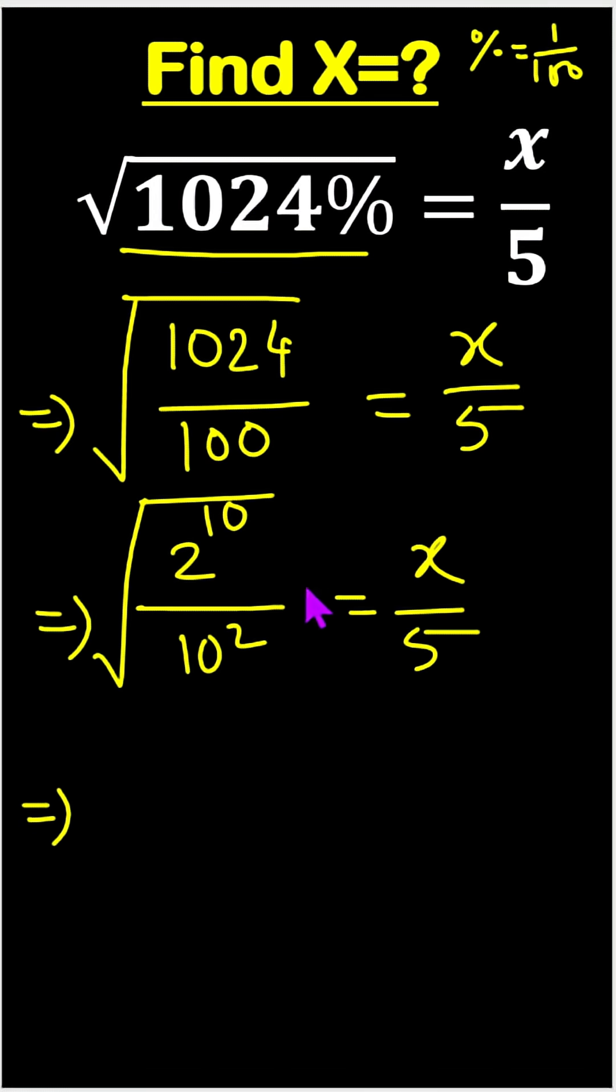After square root of this fraction, we can write 2 to the power 10 times 1 by 2, and 10 square square root means 10, equals to x by 5.